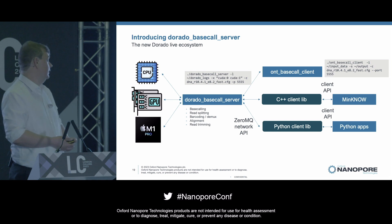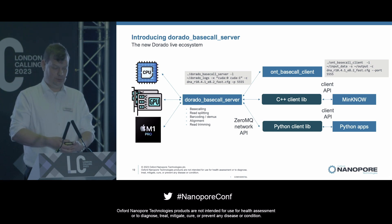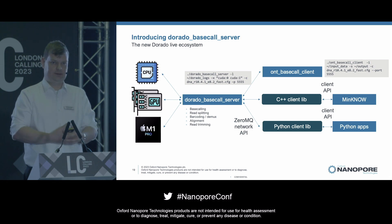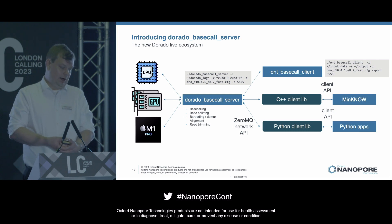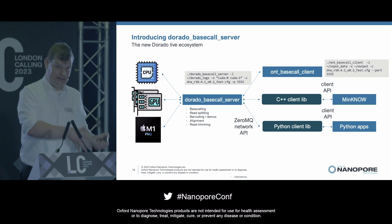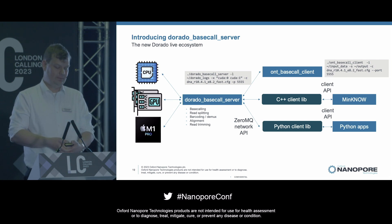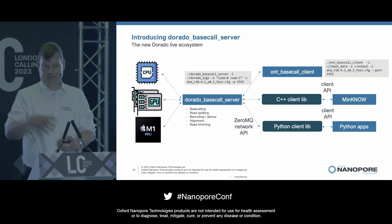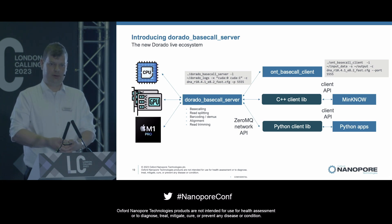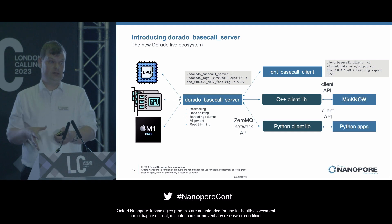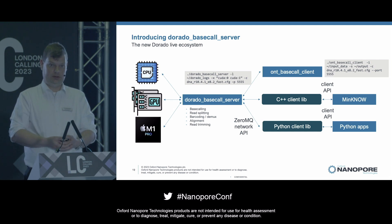What I want to introduce today is the Dorado Base Call Server. We've created this executable and it's designed to be a drop-in replacement for the Guppy Base Call Server. It provides base calling using Dorado, so you get all the benefits of great new high-performance canonical and mod-base base calling. Features not yet added to Dorado are still available in the Dorado Base Call Server using legacy Guppy functionality — for example, barcode demultiplexing. We'll provide a command line client, ONT Base Call Client, and the C++ client library and Python client will continue to work, so if you have workflows using ONT PyGuppy Client you should be able to seamlessly switch over.